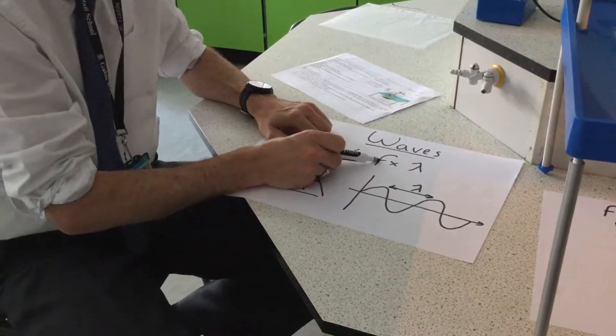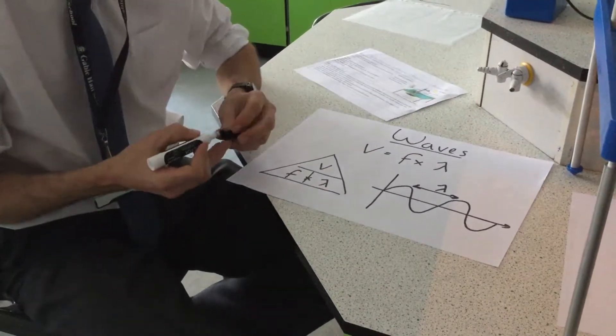So if I double the frequency I have to halve the wavelength to get the same velocity and that is the point of this practical. It's quite a simple one, it's just to show or help prove the wave equation that you have to learn for the exam. I hope that helps.